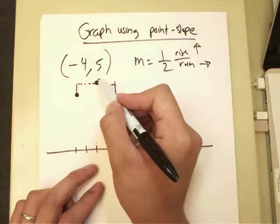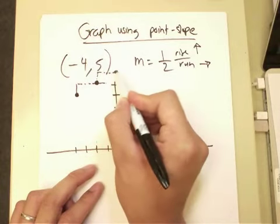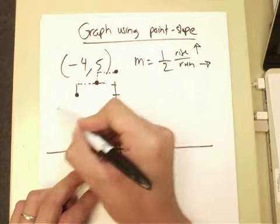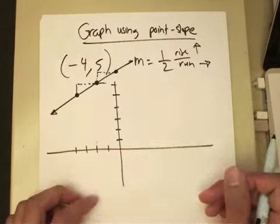And again, to get to my third point, I do the same exact action. I go up one and go over two. And when you connect these three points, you will have yourself a line using the slope and a point.